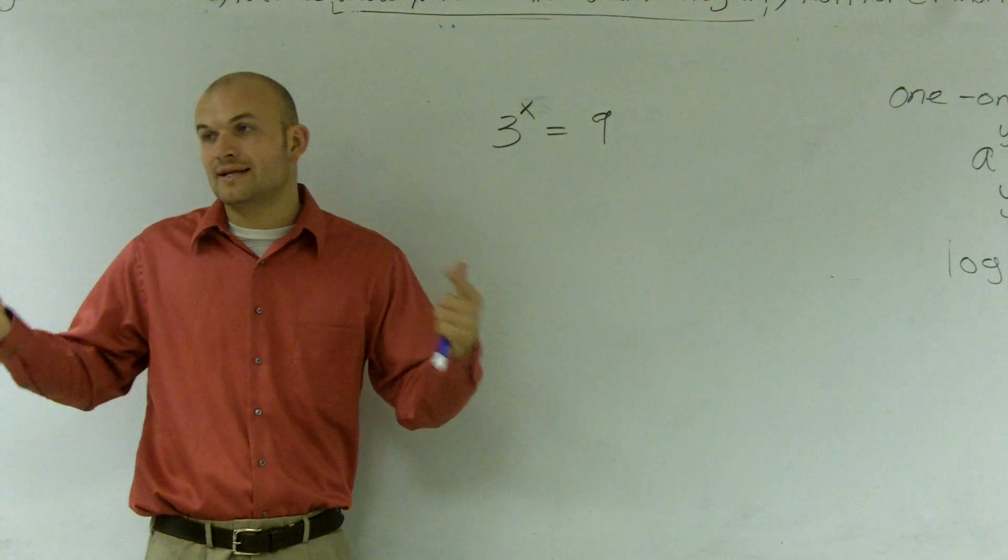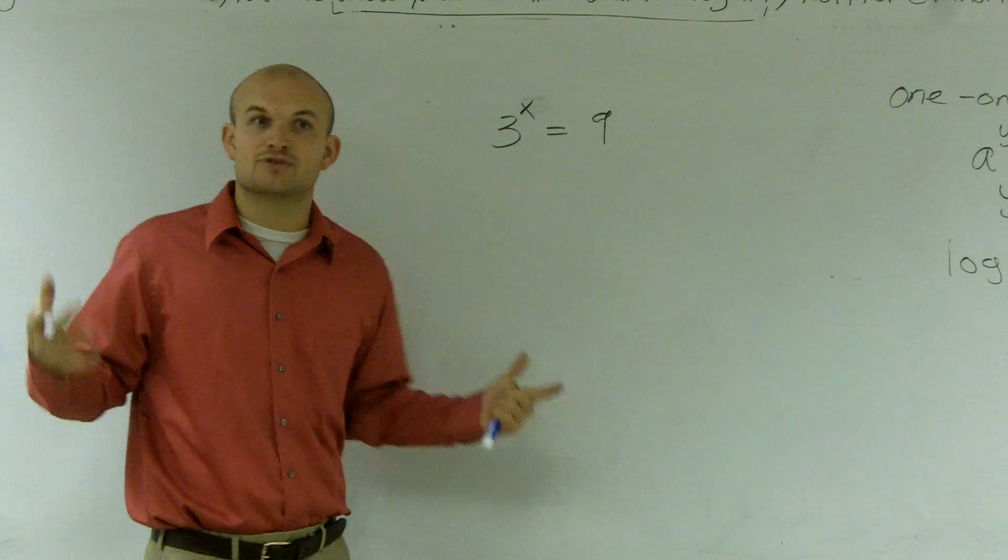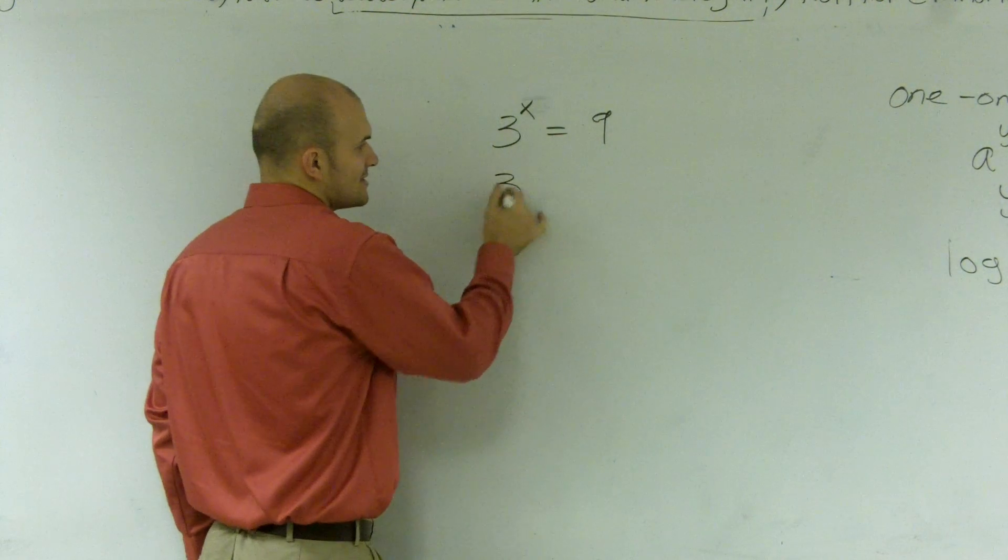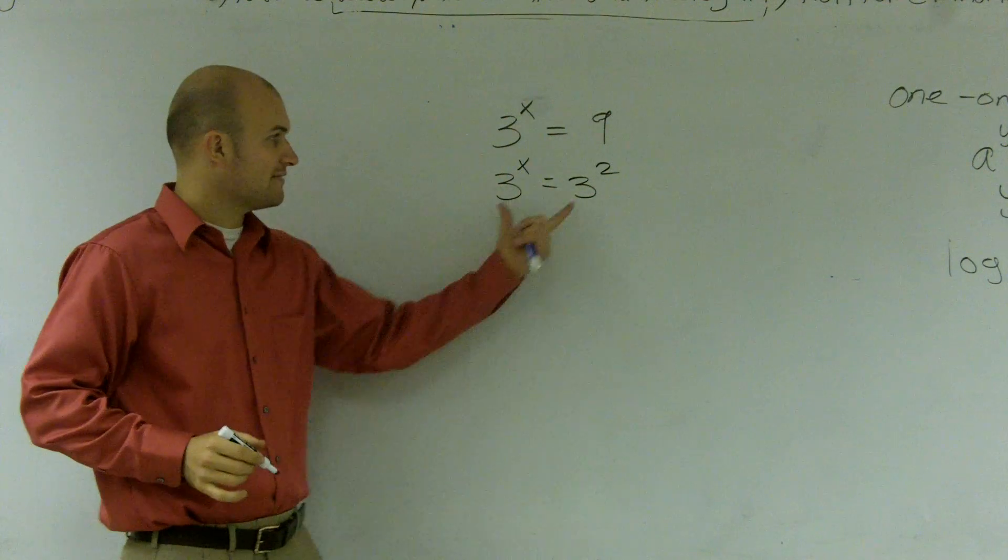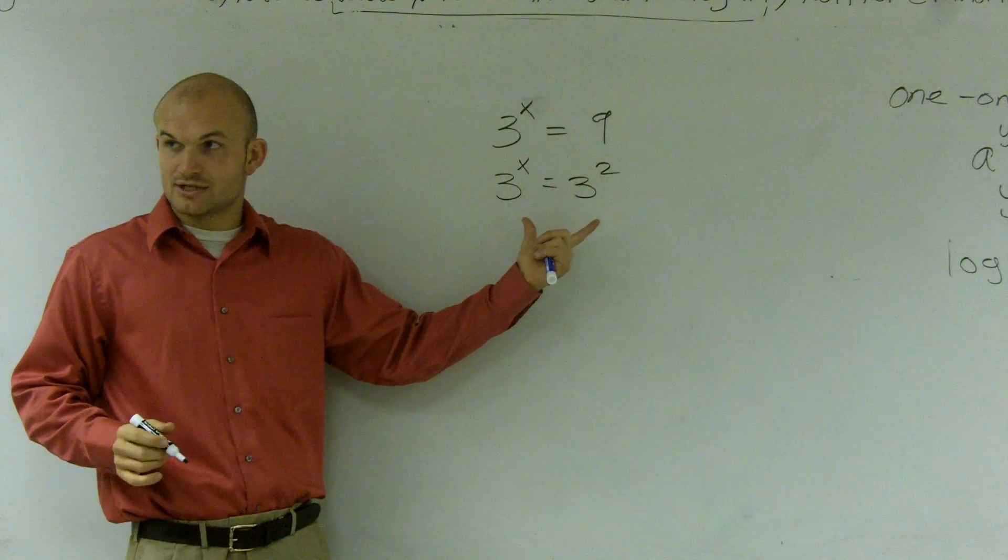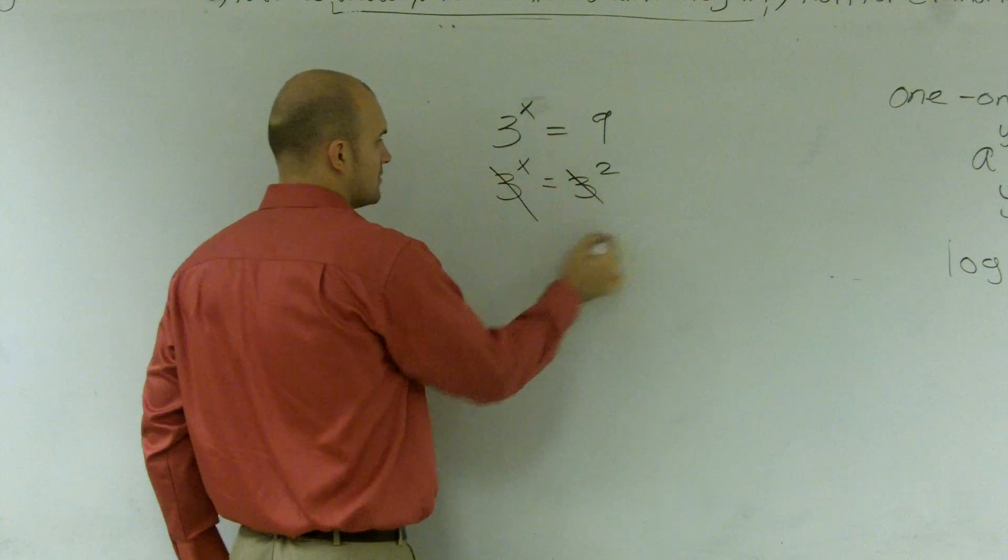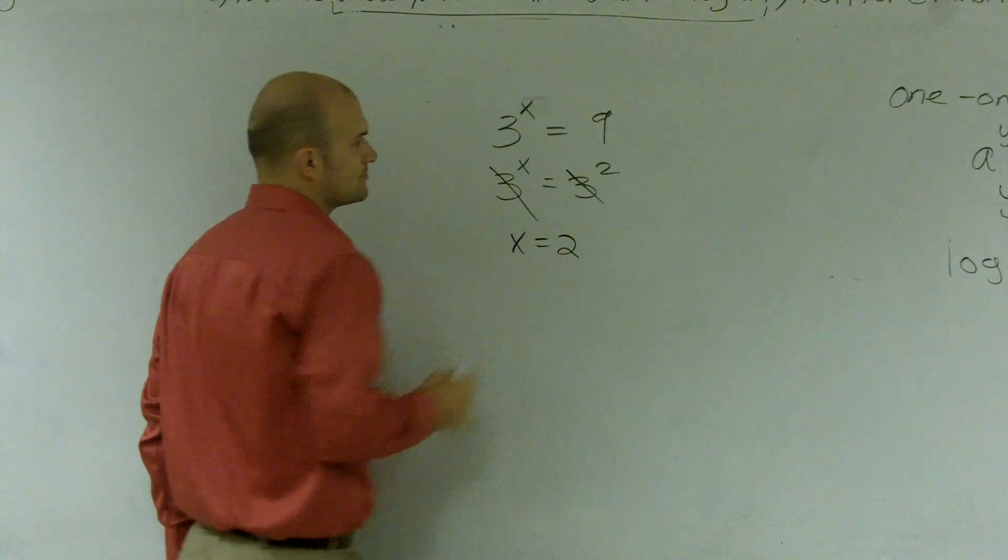However, let's practice writing it as a 1 to 1 property so I can prove that. I can rewrite this as 3 to x equals 3 squared. Whenever I have the same number raised to the power, those cancel out, x equals 2, right?